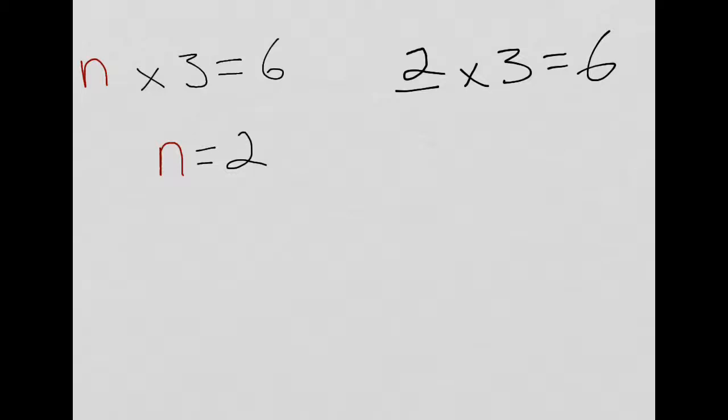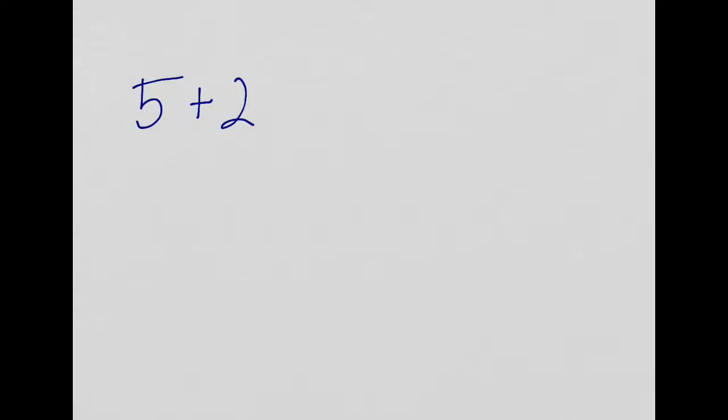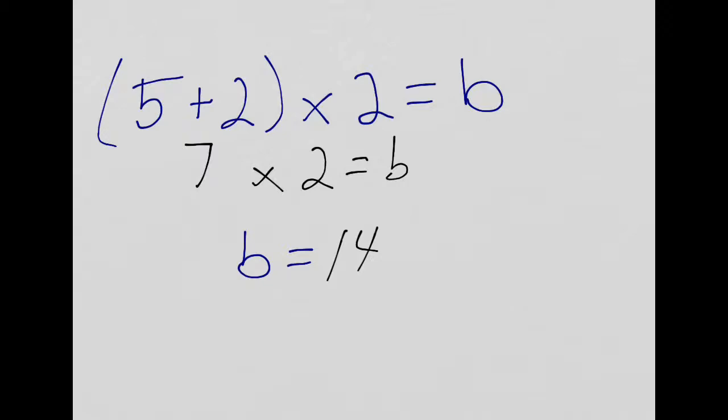Let's take this one for example. 5 plus 2 times 2 equals B. What does B equal? Well, we do parentheses first, and we'll cover that in a later video. So, I see that that is 7. And it then becomes 7 times 2 equals B. So, B equals 14. Because that's 7 times 2. 7 plus 7, 14.